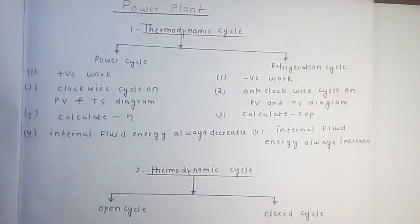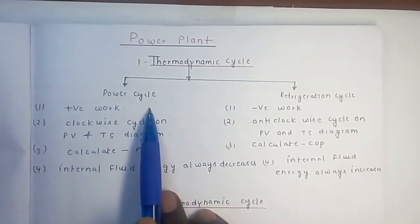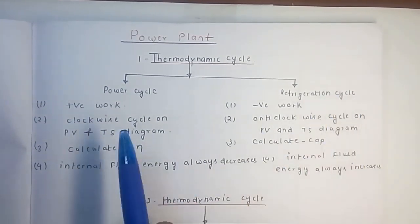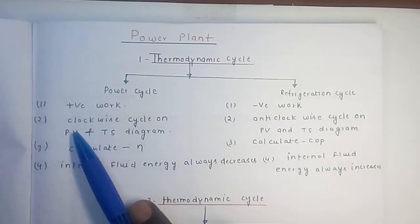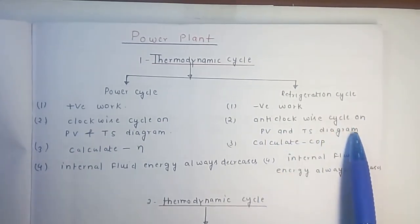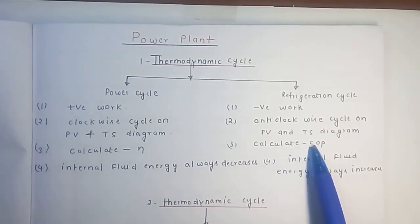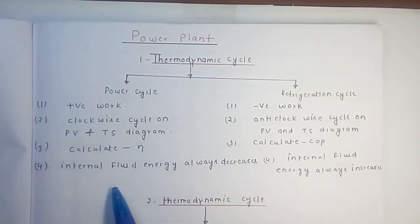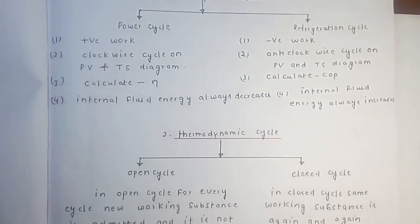Power plants are based on thermodynamic cycles. Cycles are of two types: the first is the power cycle and the second is the refrigeration cycle. In a power cycle we obtain some work, while in a refrigeration cycle we have to do some work. Power cycles are clockwise on PV and TH diagrams, while refrigeration cycles are anti-clockwise. In a power cycle we calculate efficiency, and in a refrigeration cycle we calculate COP (coefficient of performance). In a power cycle, internal fluid energy always decreases, while in a refrigeration cycle it always increases because heat is added in the evaporator to cool the space.